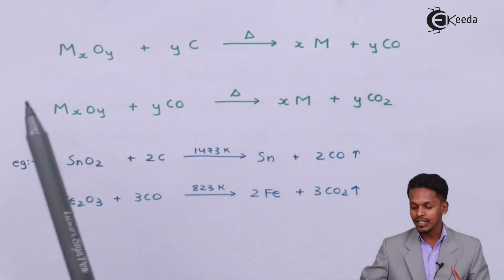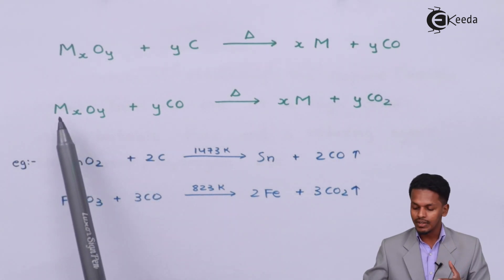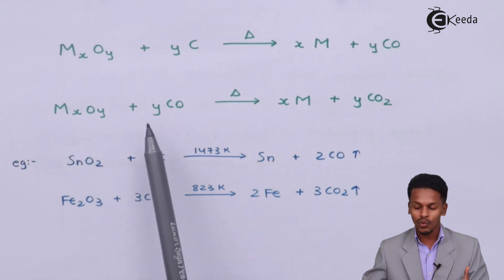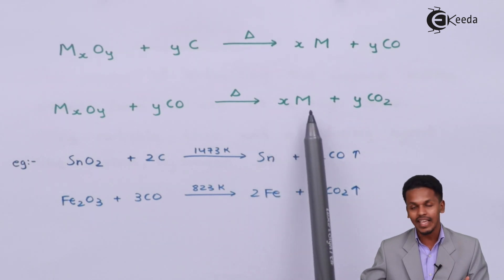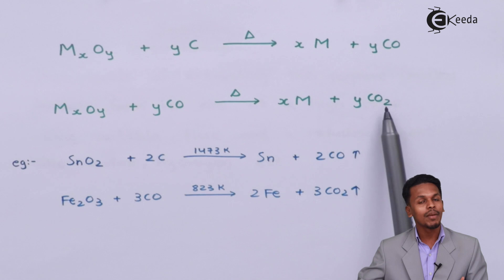The other method is we can react MxOy with y moles of CO (carbon monoxide) to obtain crude metal xM along with y moles of CO2 as a byproduct.